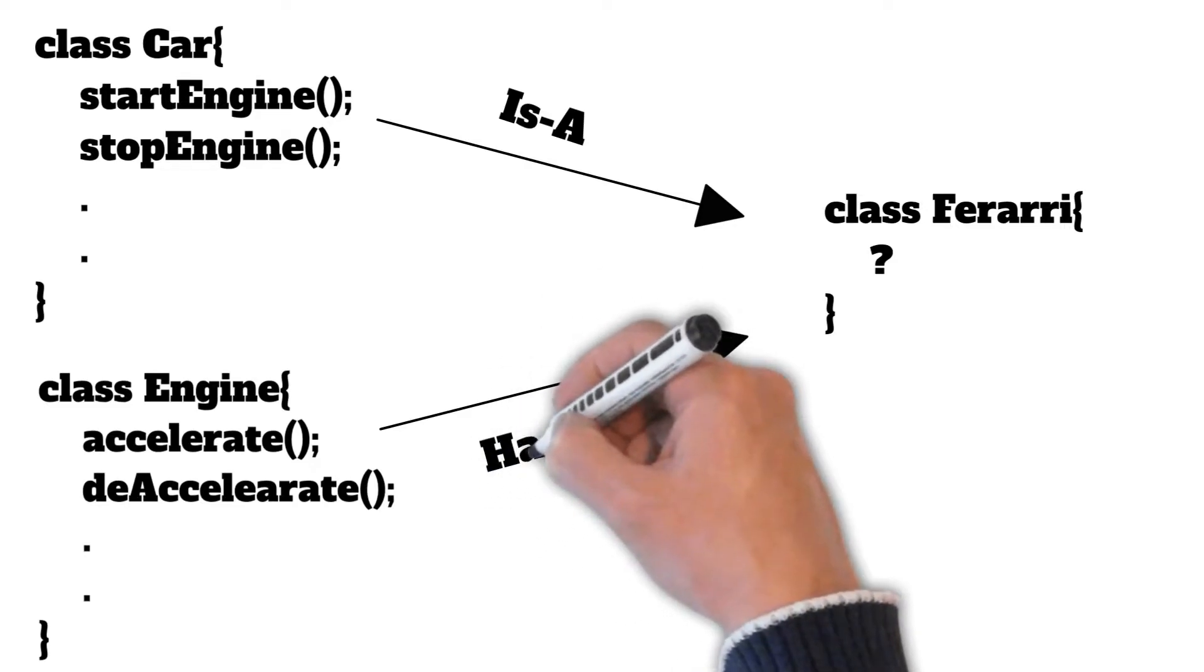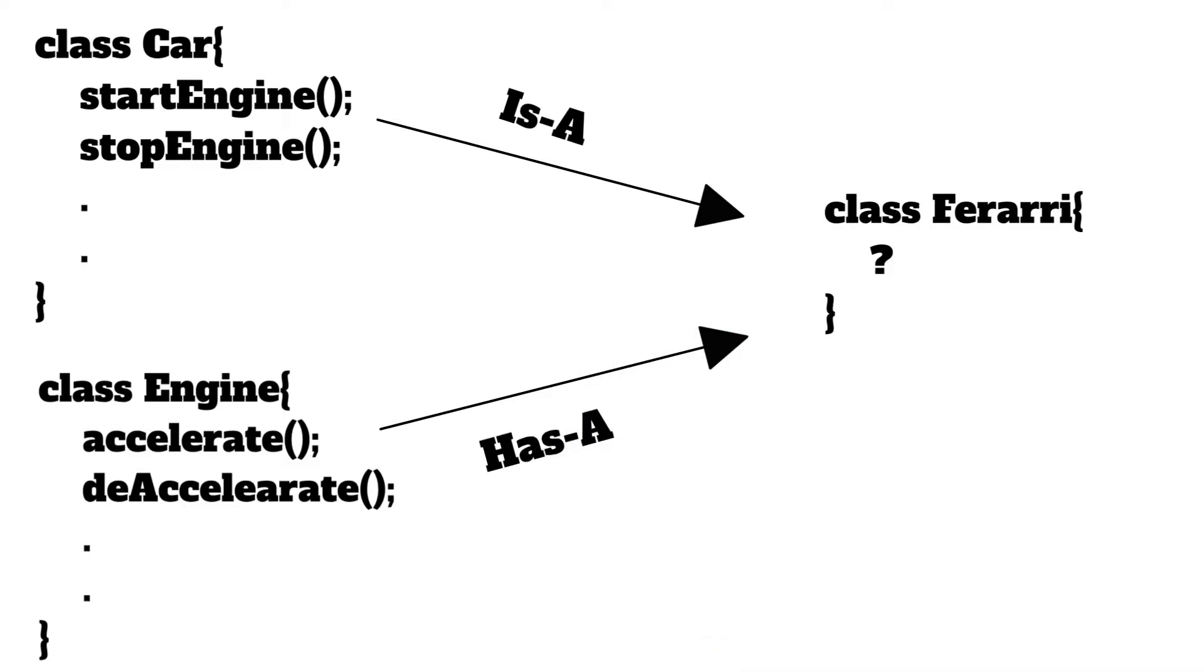In case of an engine, a Ferrari will have an engine. A Ferrari might have two engines as well, or it may have an advanced version of an engine. So basically, Ferrari owns an engine. If it is a dead Ferrari, it might not have an engine as well.